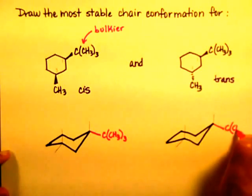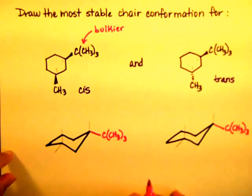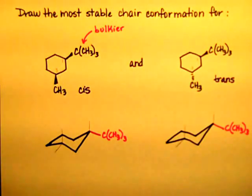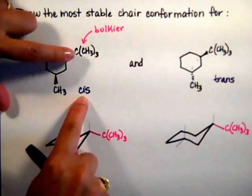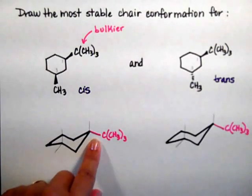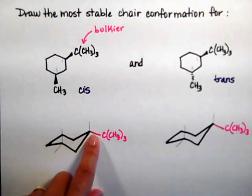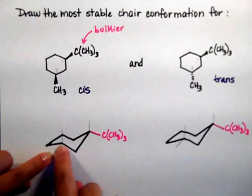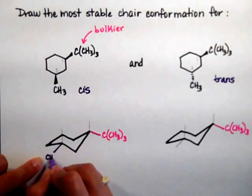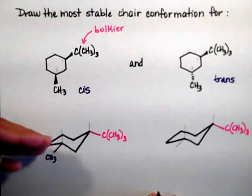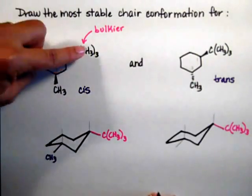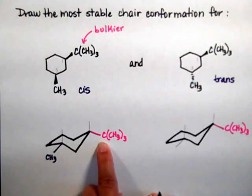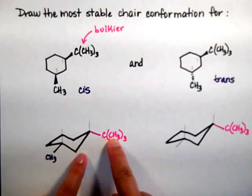What I'm thinking is: bulkiest group goes equatorial. Now I need to put my methyl. The methyl is slightly smaller, but right now the key limitation is that I have to put that methyl cis to my tert-butyl. I put my tert-butyl in an equatorial position going down, so when I go to carbon number 3 and put my methyl, I have to put it cis — down, down. I have to put both of them down. That's how you immediately get to the most stable conformation: pick the biggest substituent, put it equatorial, then follow the cis relationship for the remaining substituents.